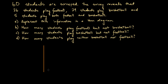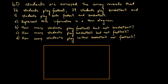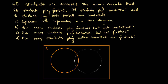Let's go ahead and draw a Venn diagram. Venn diagrams are a great way to keep track of information where we have overlapping regions. We're going to call this our sample space — A for all students — so all 60 students are represented here. We'll draw two overlapping regions: the first labelled F for football, and the second labelled B for basketball.